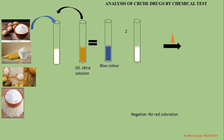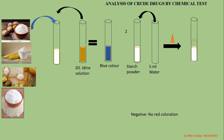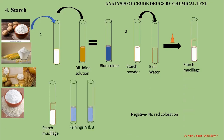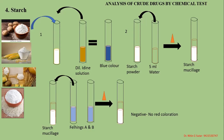The second test: take the aqueous solution of starch, add 5 ml of water, and heat the mixture — starch mucilage is formed. This starch mucilage is used for further testing. The starch mucilage treated with Fehling's solution A and B and heated gives no color reaction. This is different from previous drugs where a reddish-brown color precipitate was formed.